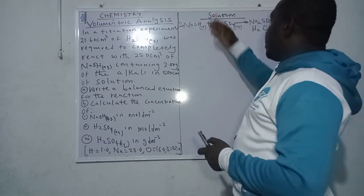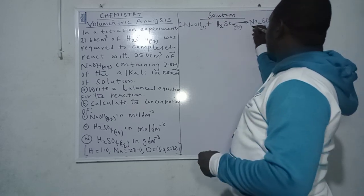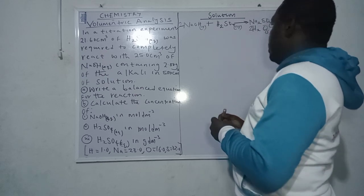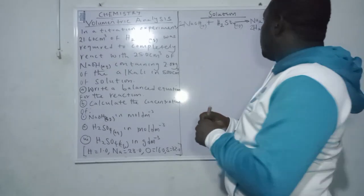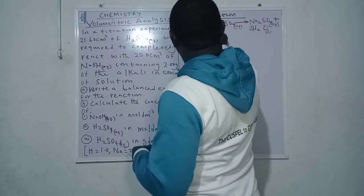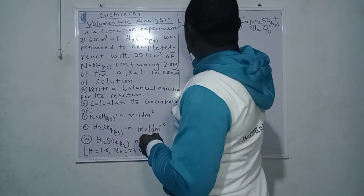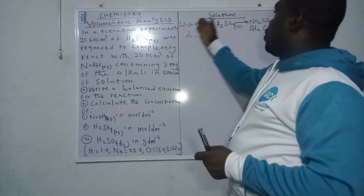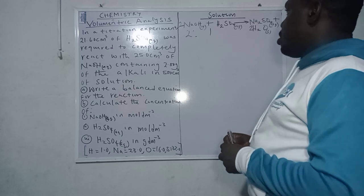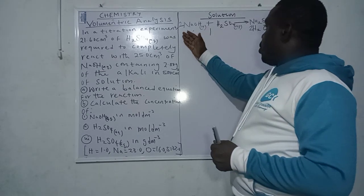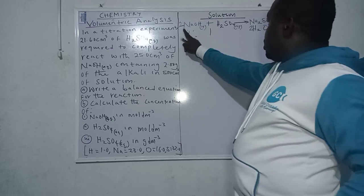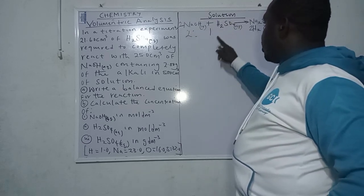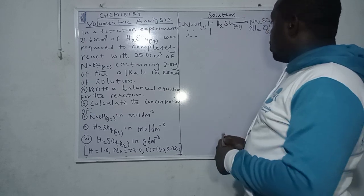We check if hydrogen is balanced — it's now balanced. So the balanced reaction is 2NaOH + H₂SO₄ → Na₂SO₄ + 2H₂O. The ratio of base to acid is 2 to 1, meaning the mole ratio of NaOH is 2 and H₂SO₄ is 1.